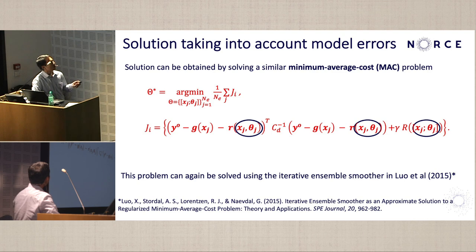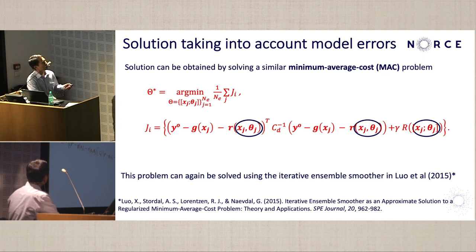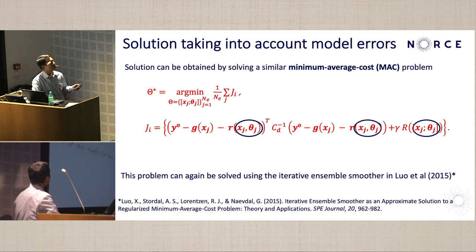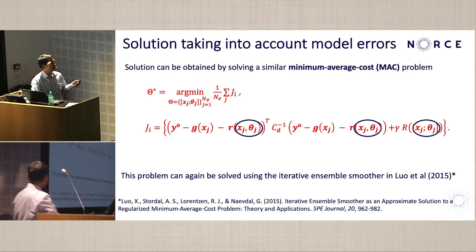In the original objective function without model errors, the residue function is absent. In the presence of model errors, we introduce this residue functional into the data mismatch term. This residue functional takes the reservoir model variables and the parameters of the machine learning model as inputs. This means that in the modified minimization problem, we not only estimate the reservoir model variables but also optimize the machine learning model parameters — a kind of joint estimation scheme in data assimilation. This modified minimum average cost problem can also be solved by an iterative ensemble smoother.